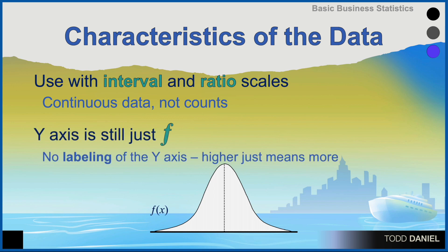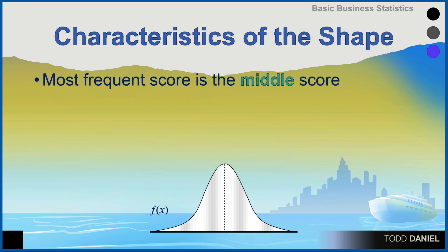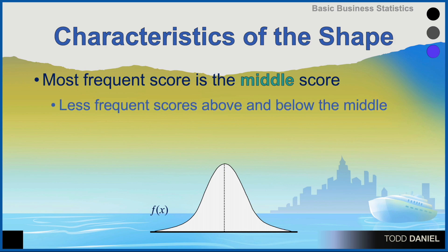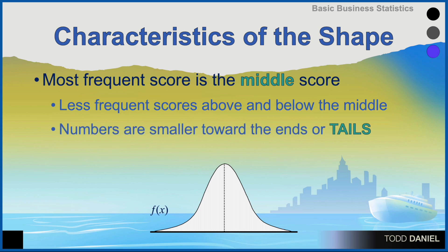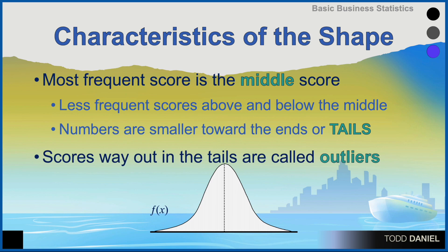You'll notice that there is no y-axis drawn in — it's understood to be there. The y-axis is still representing frequency, even though it hasn't been labeled. Higher just means more when we look at the curve. The most frequently occurring scores are in the middle, with less frequently occurring scores above and below the mean, and the smallest frequencies out in the ends — what we call the tails of the curve. Scores that are way out in the tails are called outliers because they lie far out from the mean.